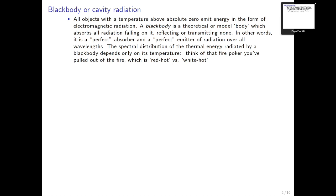Think of a fire poker that you've had in a fire: if it's kind of hot, you pull it out and it's red hot, but if you leave it in a really hot spot or blow a lot of air on it, it will be white hot. There's a characteristic temperature that corresponds to the peak of the spectral distribution called the Planck distribution. Red hot versus yellow hot versus white hot — what you're seeing is pretty much the peak in this broad spectral black body distribution.